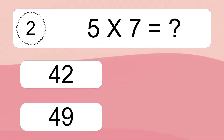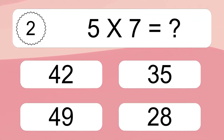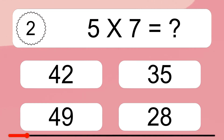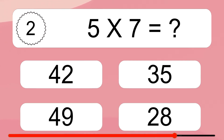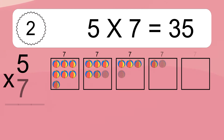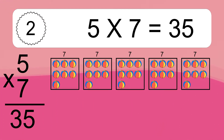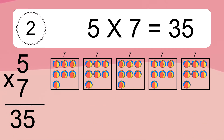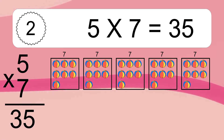5 times 7 equals what? 5 times 7 equals 35. We have 5 boxes, and each box has 7 colorful balls inside. If you count all the balls in all the boxes together, you will have 5 times 7 balls.